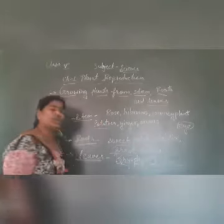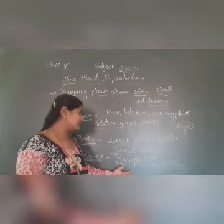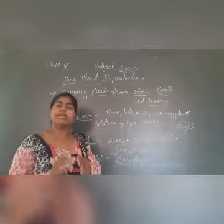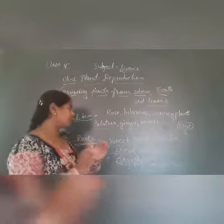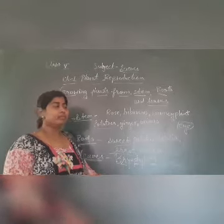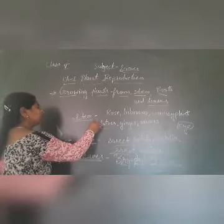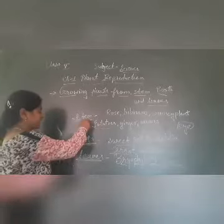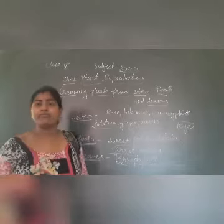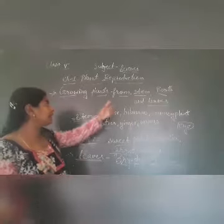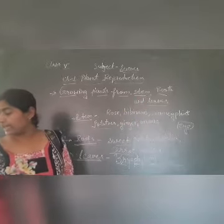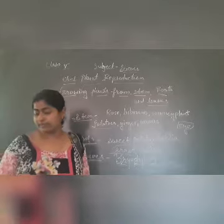From leaves: bryophyllum is such a plant whose leaf, when cut, grows a small new leaf on top of it. We cut that and grow it to get a new bryophyllum plant. So these are examples of plants that grow new plants from their stem, root, and leaves. We studied germination, and then we saw examples of plants that grow new plants directly from their own parts.